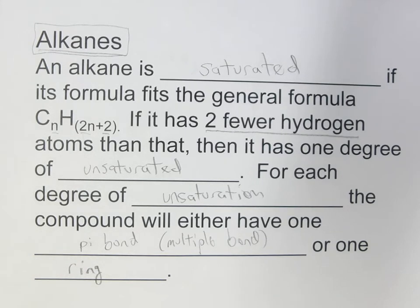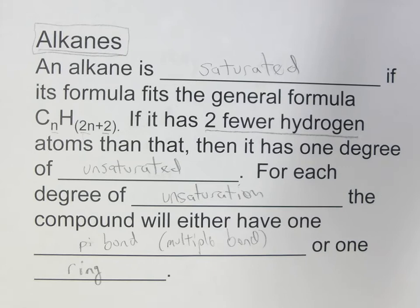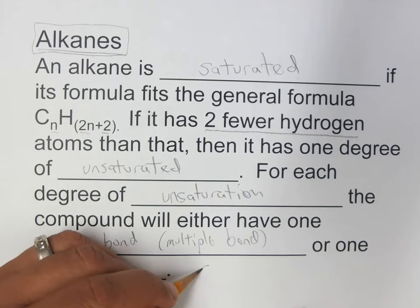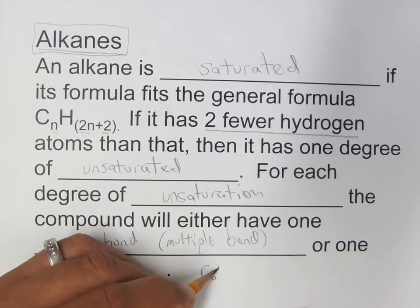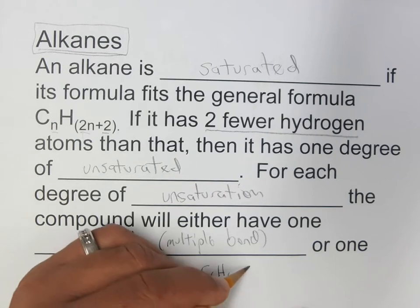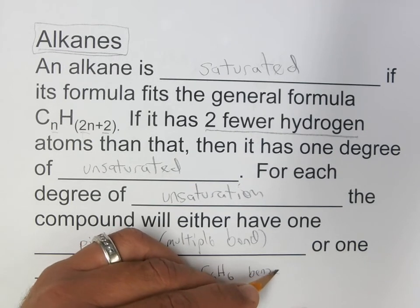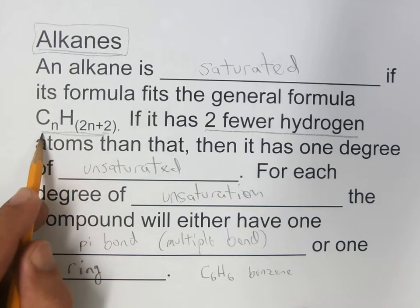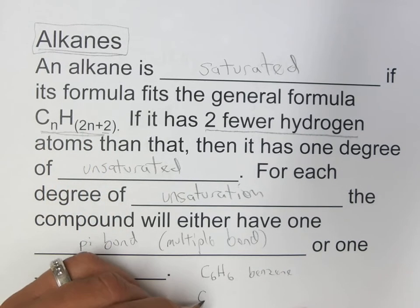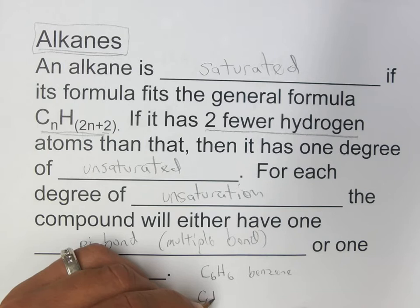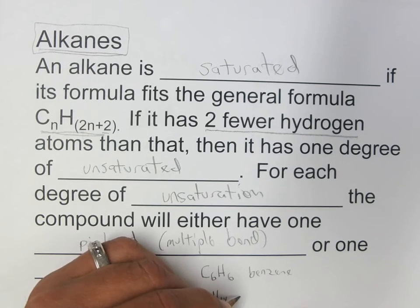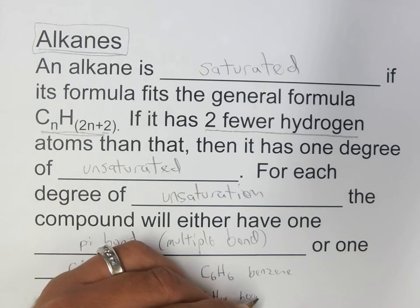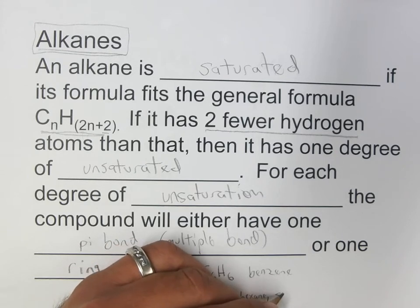If you're looking at a formula, you can tell the number of unsaturations. Let's take C6H6, which is benzene. If I applied the CnH2n+2 formula, I would say that C6H14 would be hexane and saturated.